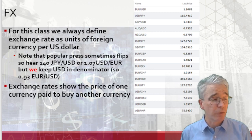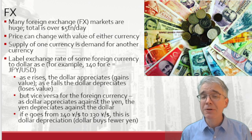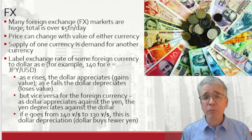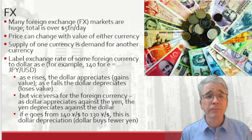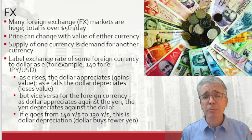We want to keep the notation as straightforward as possible. The foreign exchange markets are huge — something over five trillion dollars notional traded per day. The decisions of us little people are not going to impact those sums. Foreign exchange rates change because of supply and demand for each currency in each pair. The supply of one currency is demand for another — I can't supply dollars without creating demand for yen, euro, rupee, or whatever other currency. The US dollar is far and away the most important currency for global trade.